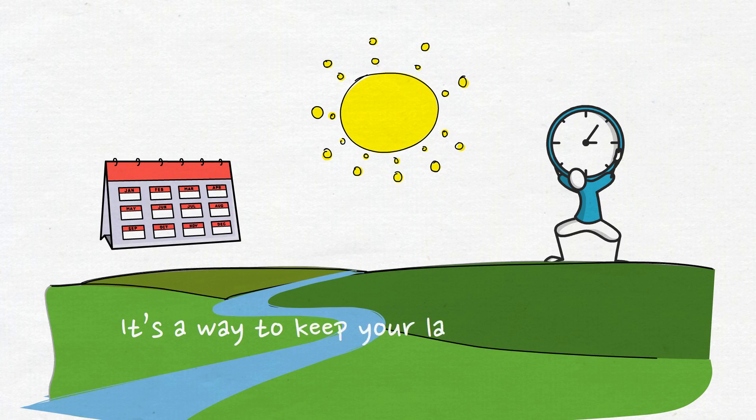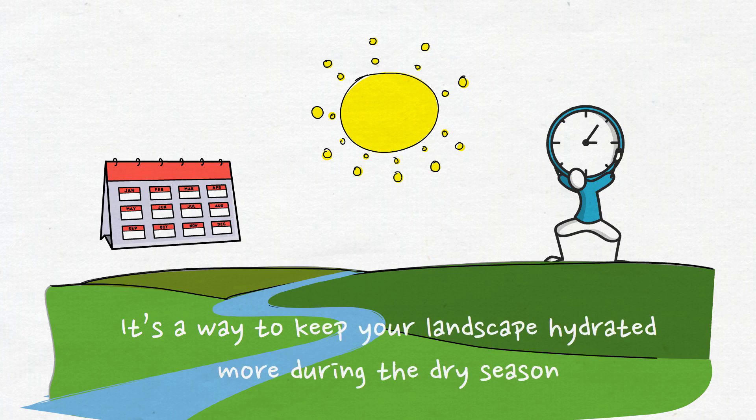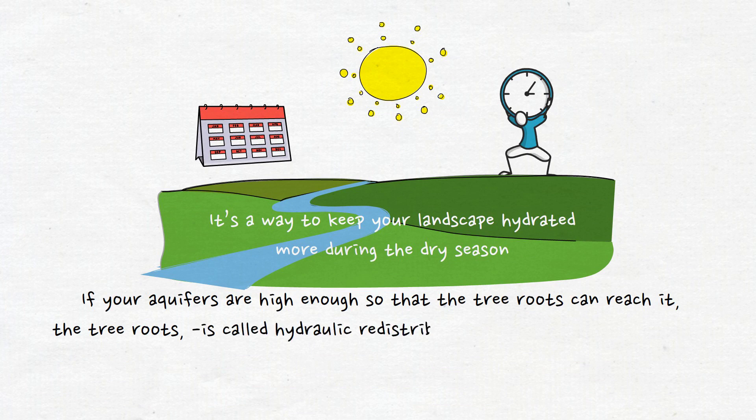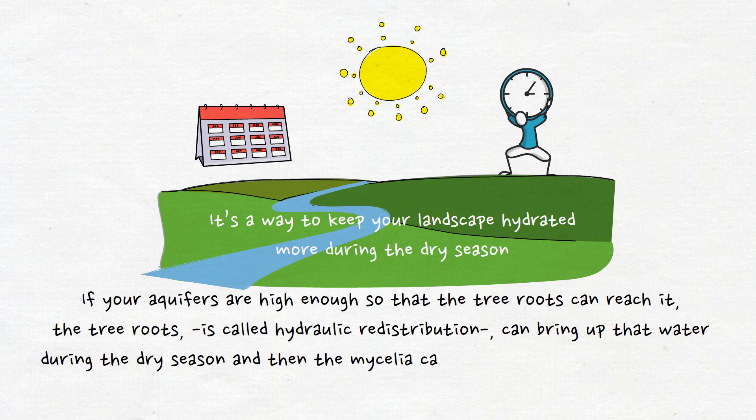It's a way to keep your landscape hydrated more during the dry season. Also, if your aquifers are high enough so that tree roots can reach it, through hydraulic redistribution they can bring up that water during the dry season. Then the mycelia can actually pass it to other trees who maybe don't have deep enough roots to get to the groundwater table.